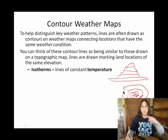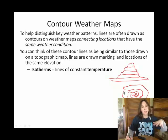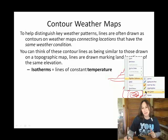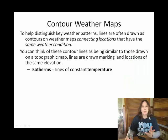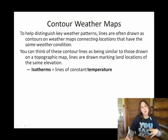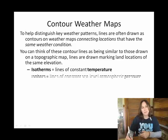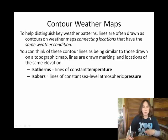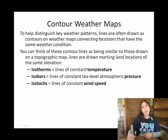We do the same thing connecting locations with the same atmospheric condition — the same temperature or the same barometric pressure. So in meteorology, when you're looking at weather maps and they're drawing contour lines connecting locations with the same temperature, we call those contour lines isotherms.